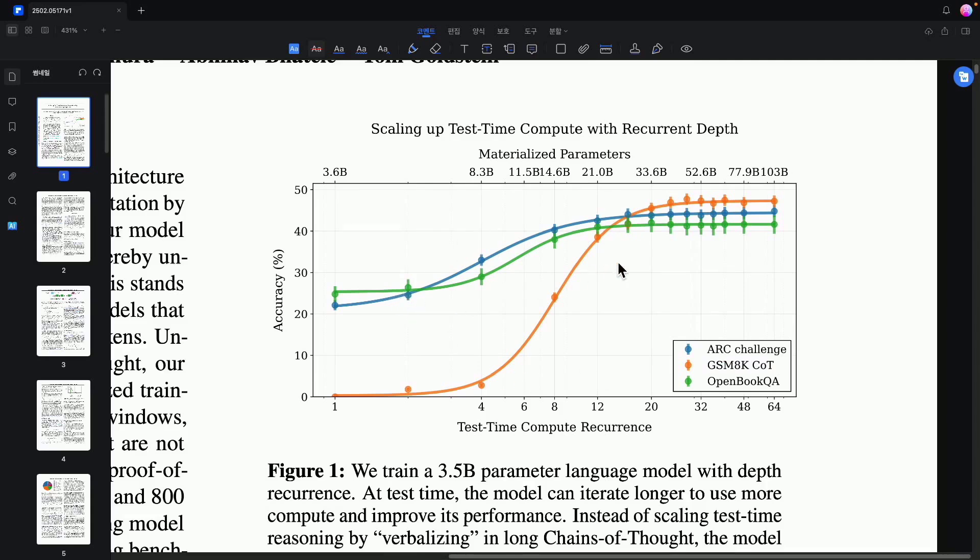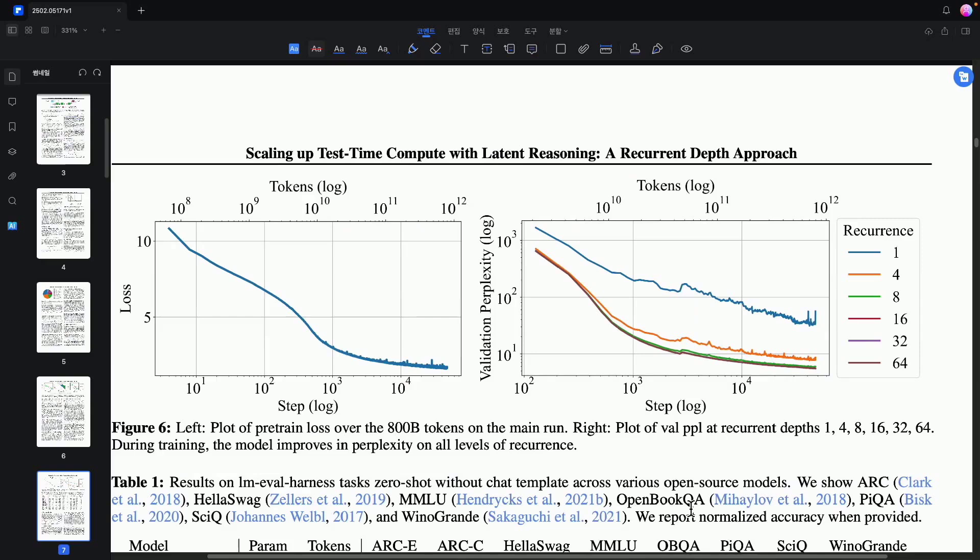However, the ARC challenge demonstrated that this trend is possible, indicating that this can be achieved without even generating a single word. The ARC challenge evaluates scientific problems and logical reasoning abilities. Open Book is also focused on science facts, and they confirmed all these findings. Figure 6 illustrates how the loss decreases with each iteration, showing a significant reduction. Additionally, perplexity, which is a logarithmic measure of confusion, decreases tenfold with each step. Even without using a chain of thought strategy, it demonstrates these kinds of results.